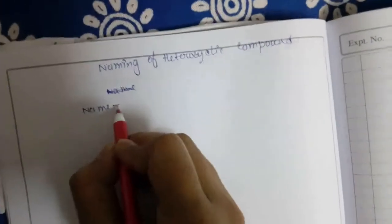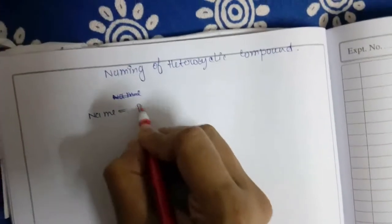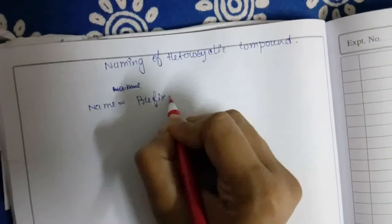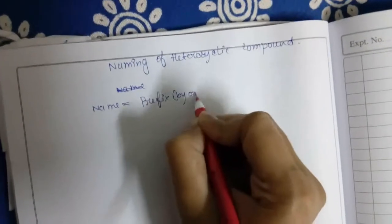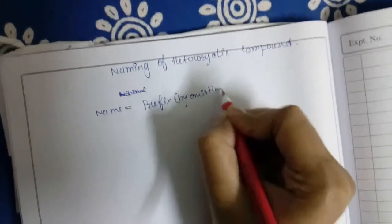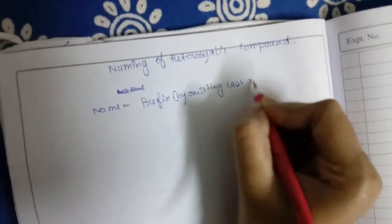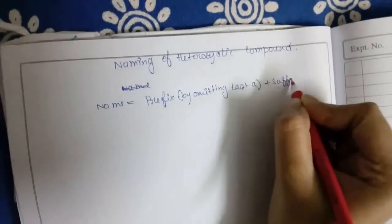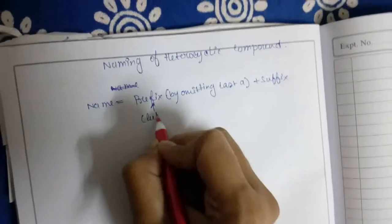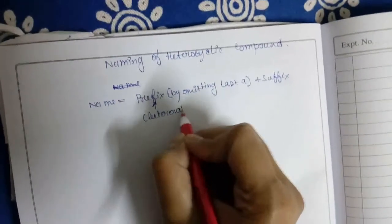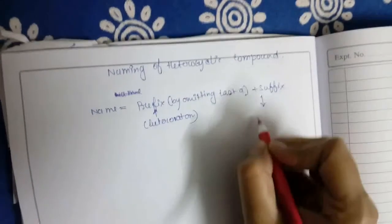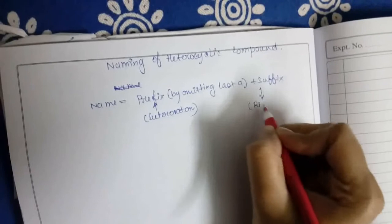For heterocyclic compounds, the prefix is written by omitting the last 'a' of the prefix, plus the suffix. Prefixes are for the particular hetero atom, and the suffixes are for ring size.